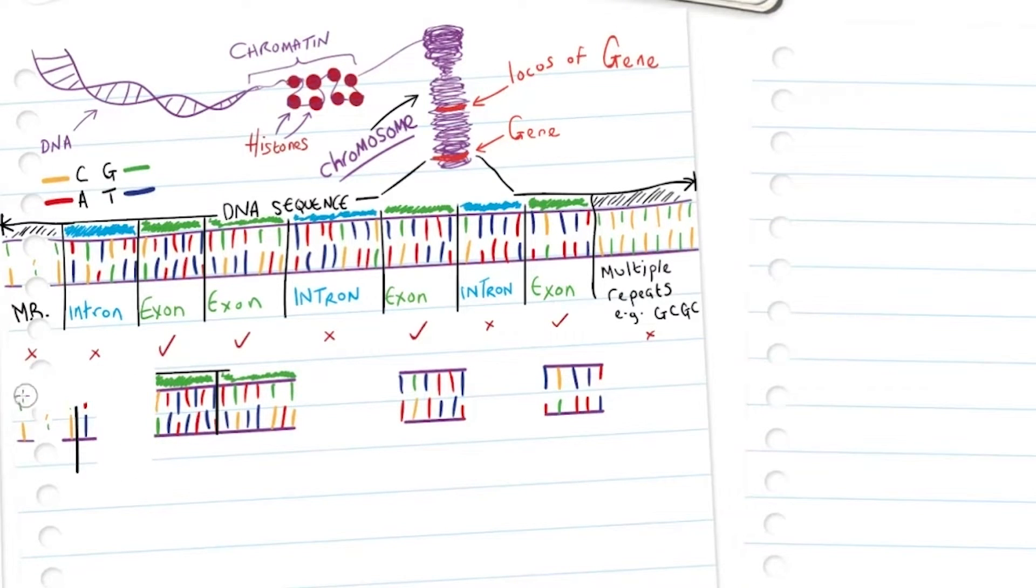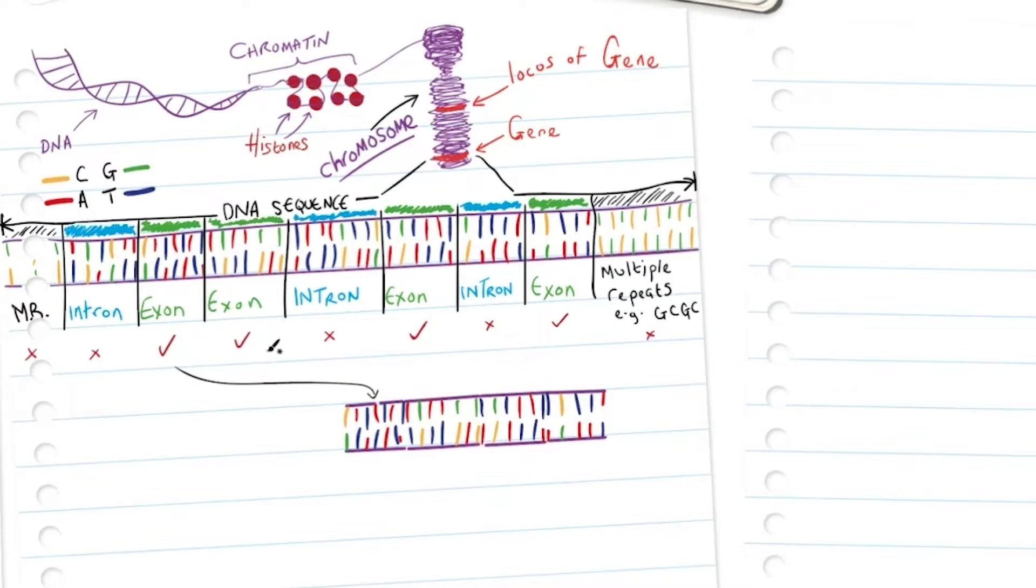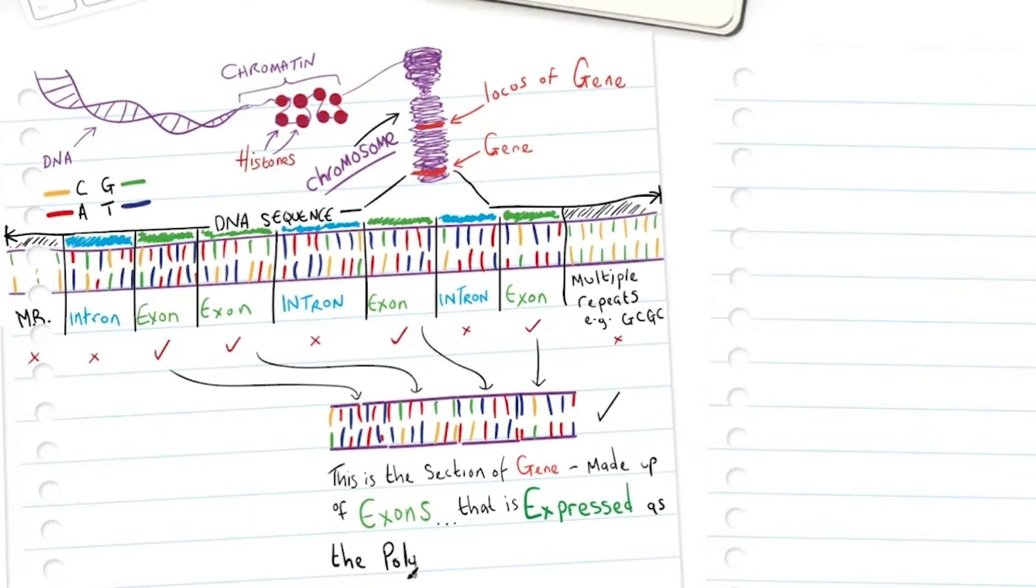That leaves us with a section of DNA made up entirely of the exons, the regions that are expressed, the regions that are coded for. This is the section of gene made up of exons that is expressed as the polypeptide.